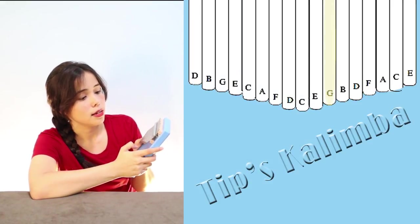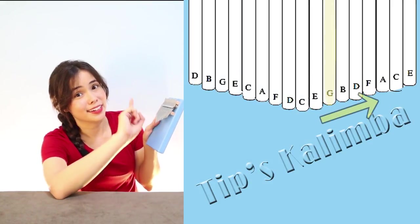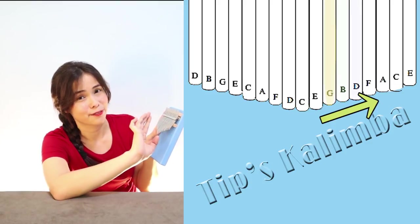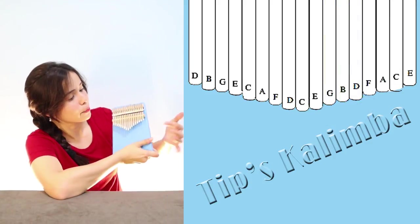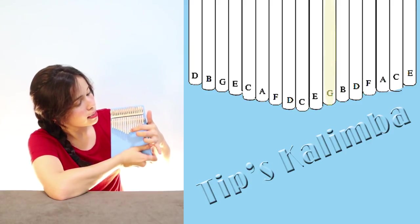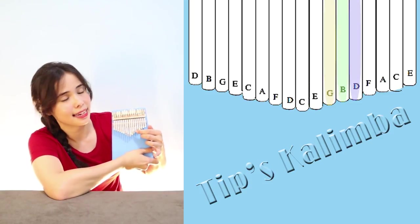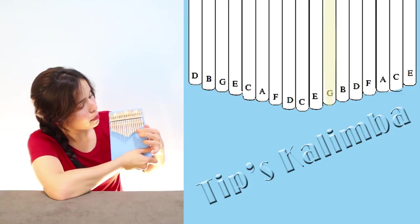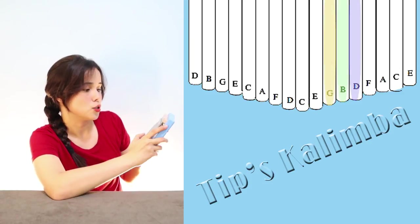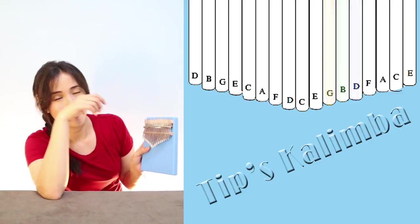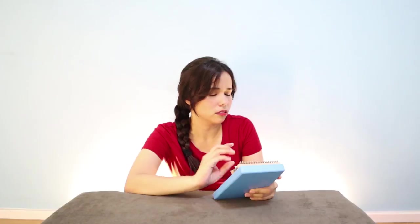If you want to play the G chord, look for G on your kalimba and find the two keys that are higher beside it on the same side. That gives you G, B, and D. Stroke them and you have your G chord.